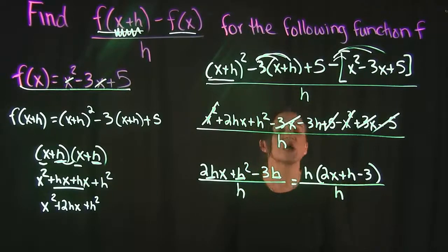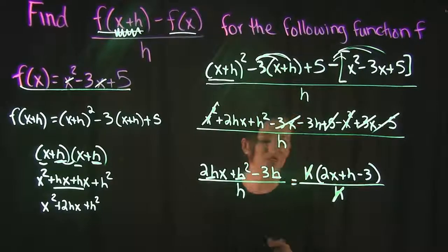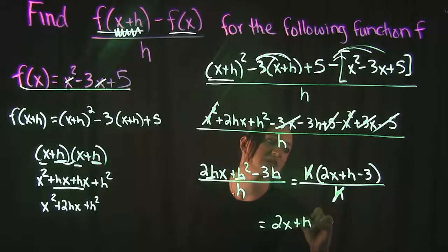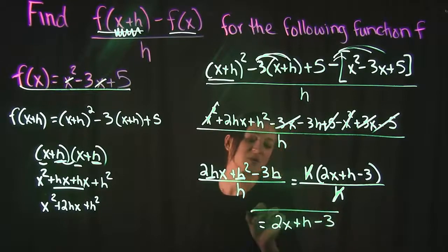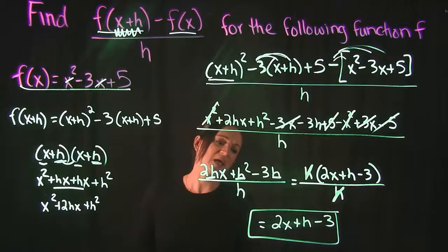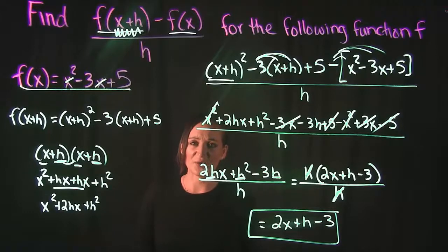And that's all over h. So now when I factor that out, this h can cancel with this h, leaving me with 2x plus h minus 3 as my final answer. So that's what we get when we do the difference quotient with this particular function. That's all for this video.